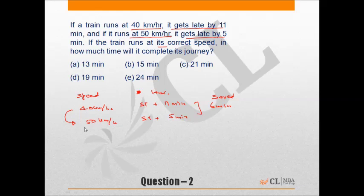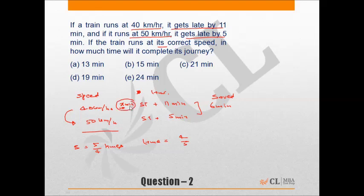Looking at ratios: the speed becomes 5/4 times, so the time becomes 4/5 times. If at 40 km/h the time taken was x minutes, then at 50 km/h it is 4/5 x minutes. The saving in time is x minus 4/5 x, which equals x/5. In other words, if originally you took 5 minutes, now you take 4 minutes, saving 1 minute for every 5 minutes.